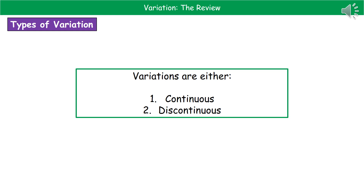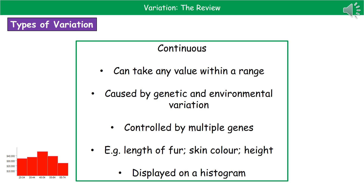When categorising variations, they can either be known as continuous variation or discontinuous variation. The key feature of continuous variation is that it can take any value within a range. These are the kinds of variations caused by both genetic and environmental factors, and they tend to be controlled by multiple genes that interact together to give a final characteristic. Examples include the length of fur in animals, skin colour in humans, and height.